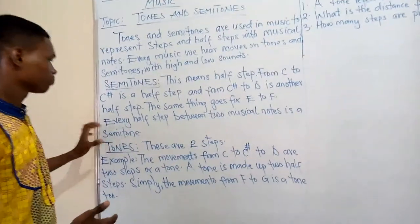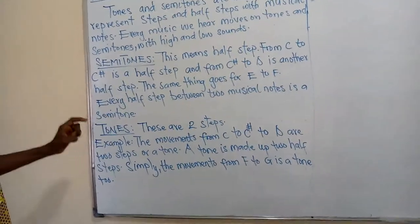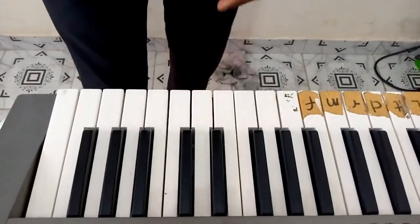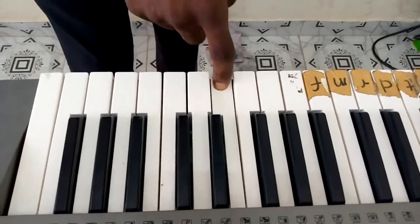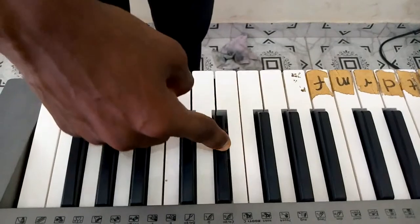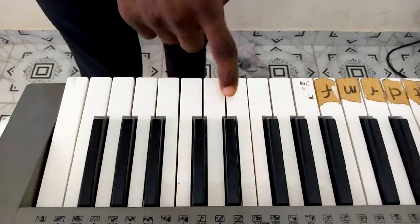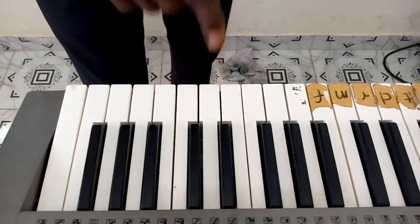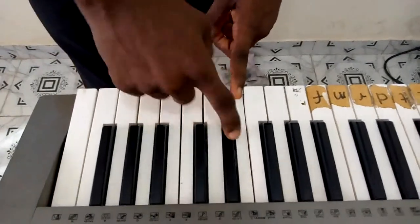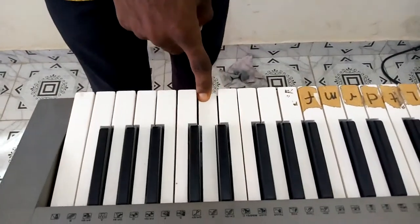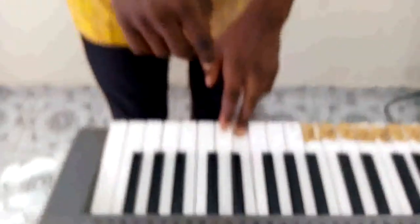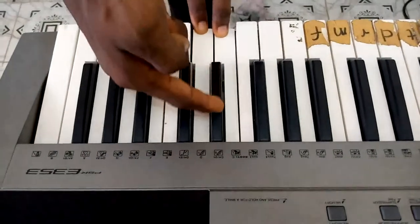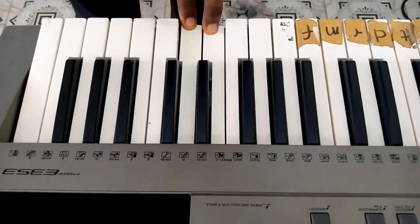Tones are two steps. The distance from C to D is a tone because if we move chromatically from C, we have to touch C sharp before we arrive at D — that means we have moved one step and then a second step to land at D. So a tone contains two steps. Also, if we press C and D together, we see a note in between them, which also tells us that this is a tone.